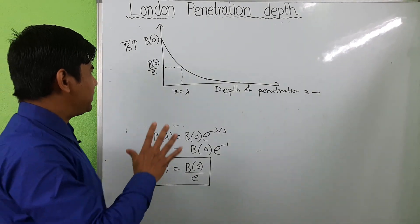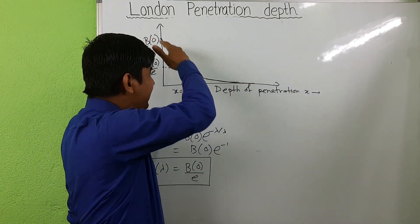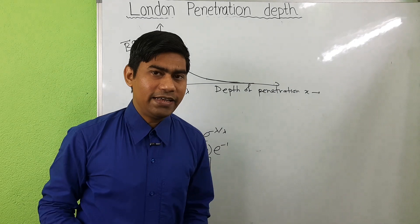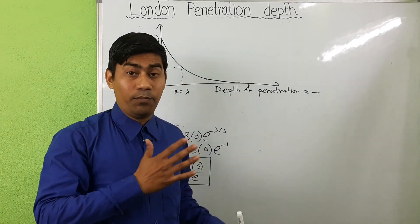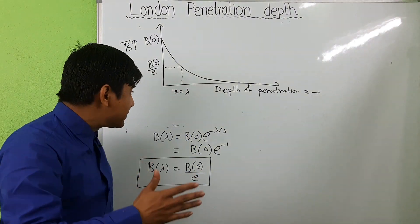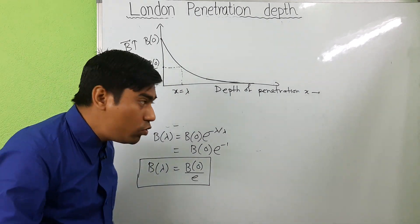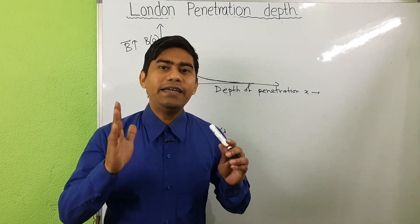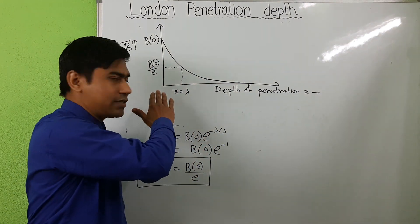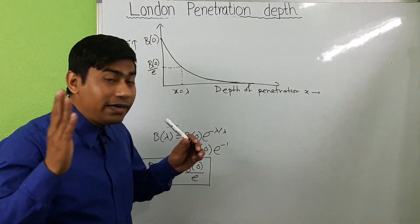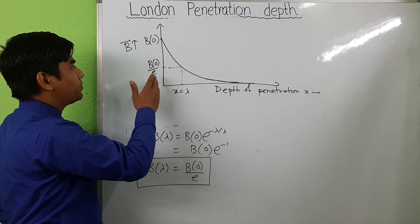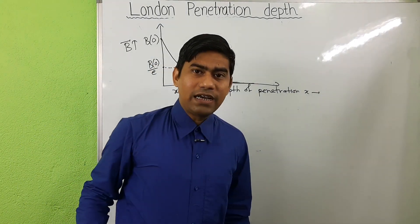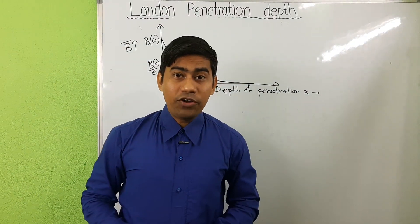This graph represents the exponential decrease of magnetic field inside the superconductor. The London penetration depth is defined as the distance inside the superconductor from the surface where the magnetic field gets reduced to 1/e times the value of the magnetic field at the surface. Thus we have discussed the London penetration depth. Thank you for watching this video.